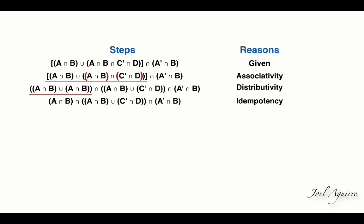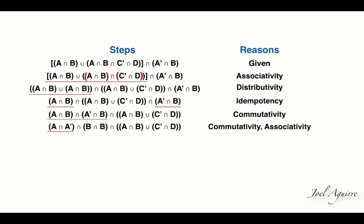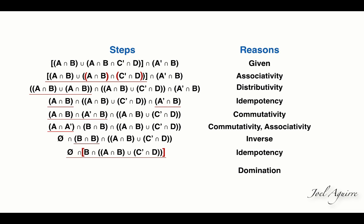We may rearrange the expressions through commutativity and manipulate groupings through associativity. A intersect of A complement, an inverse, is an empty set, while B intersect of itself is B. The intersection of a set with an empty set is empty, by domination principle. Therefore, the given expression is null.